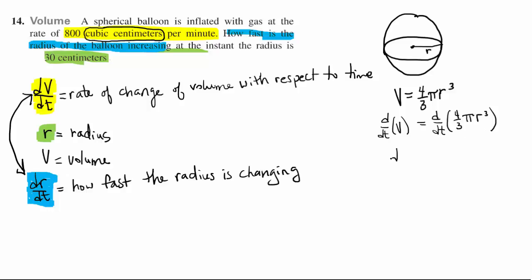So we have dV/dt equals - now remember the four-thirds and the pi are coefficients. We don't have to do anything with those. Those just stay the same. So we really just need to take the derivative with respect to time of r cubed.